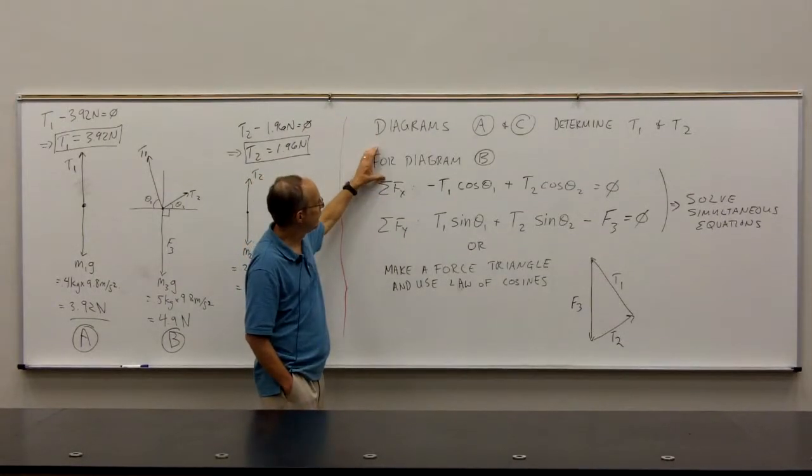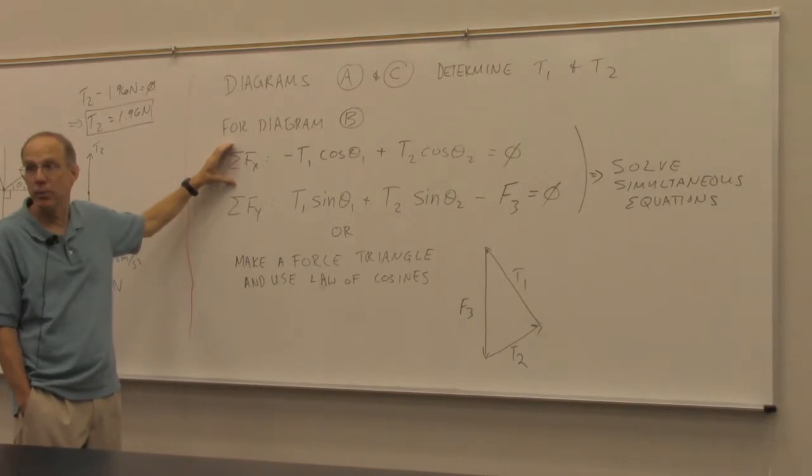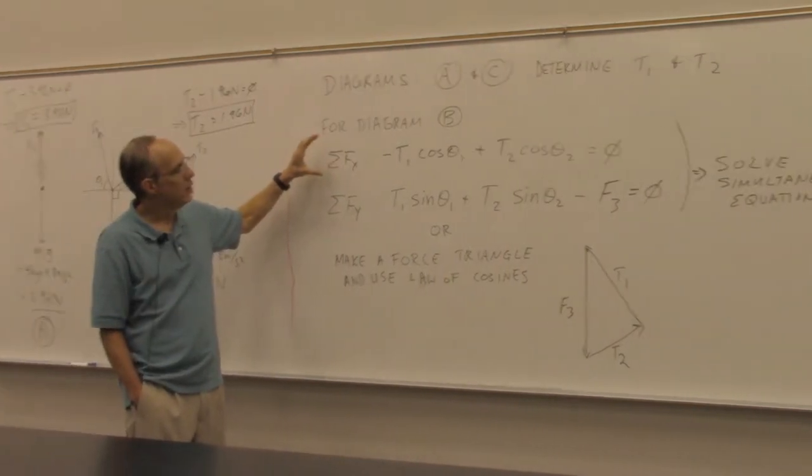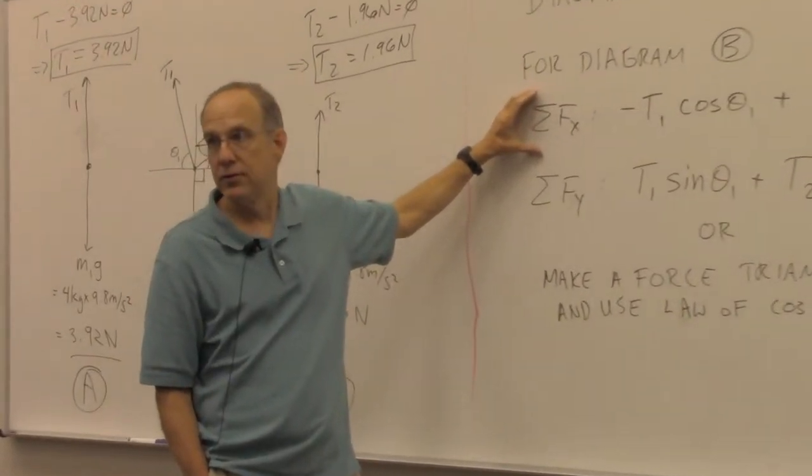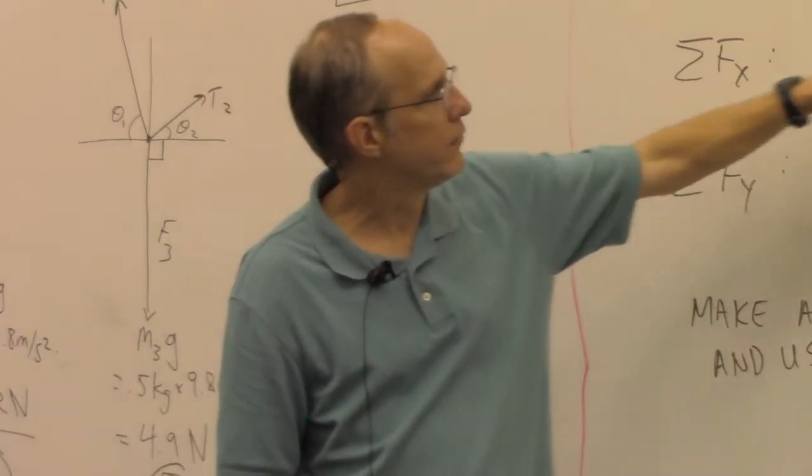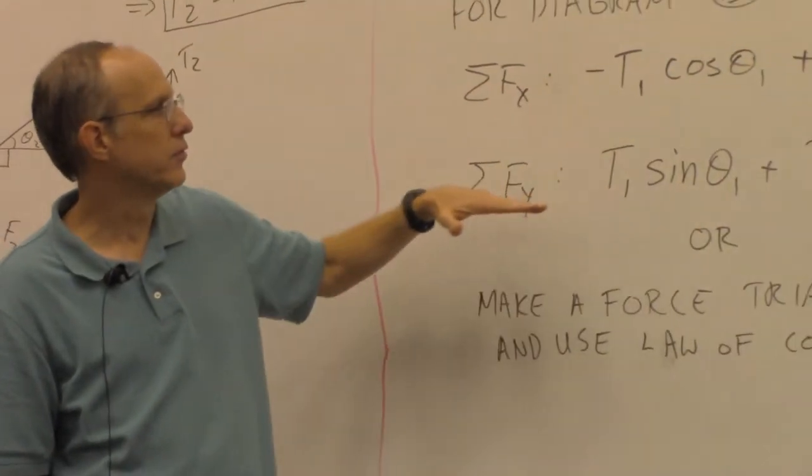Once we, from diagram B, then there's really two ways we can go about demonstrating it to the students. Either one can sum up the forces in X to determine the net force zero in X, sum of the forces in Y to determine that forces zero in Y.